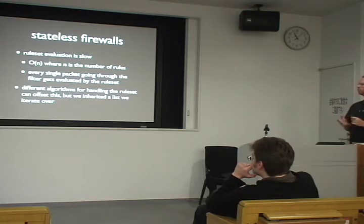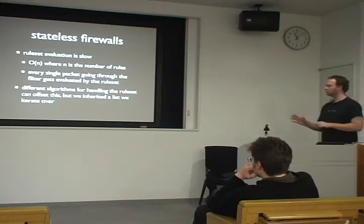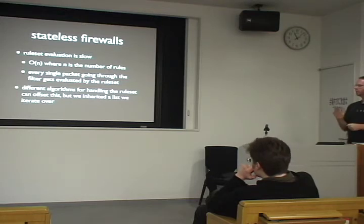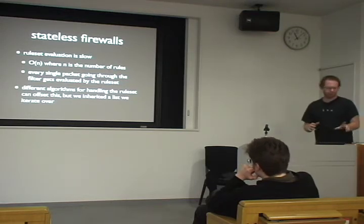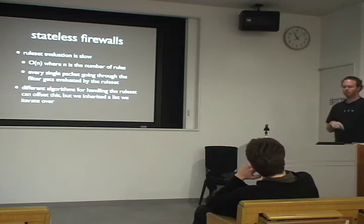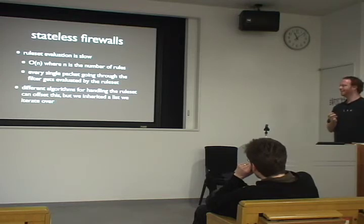The bigger your rule sets, the more time it takes to evaluate. Also, PF evaluates packets twice — once coming into the box and once going out. So it gets worse because you're running the rule set twice for every packet, which is still O(n). Every single packet through the system therefore gets evaluated by the rule set twice.